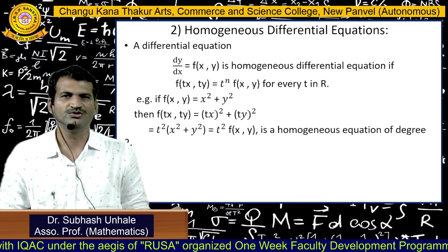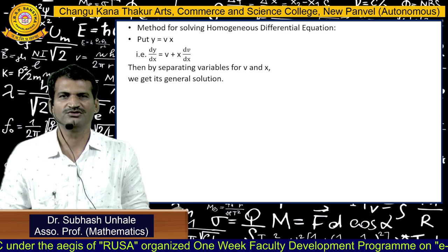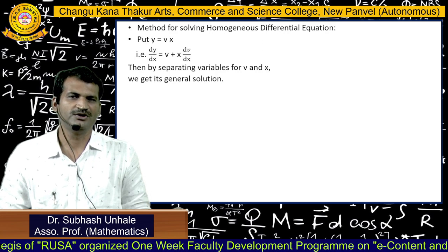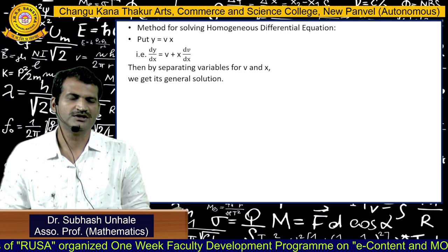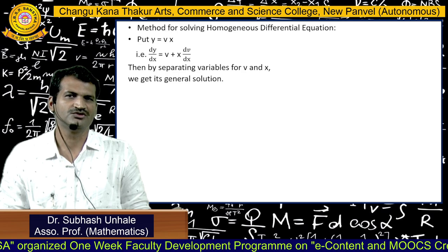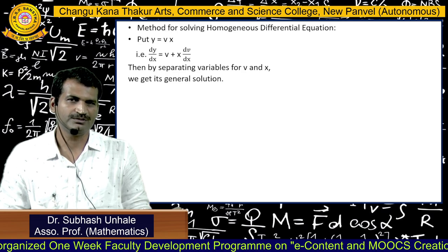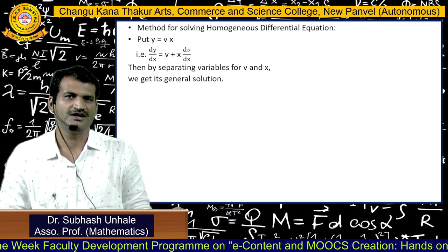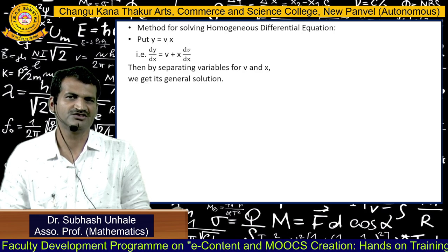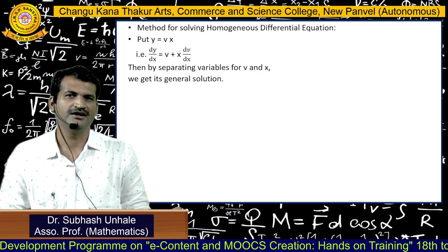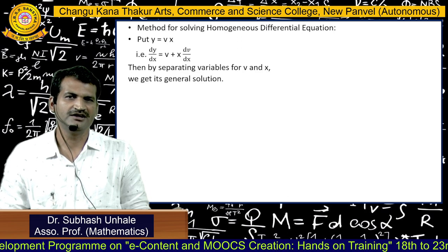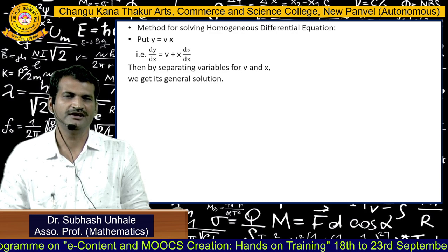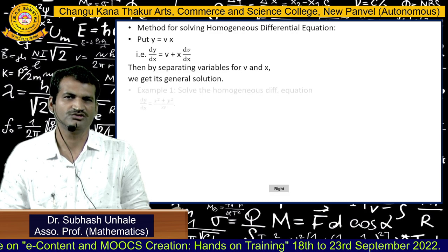To solve a homogeneous differential equation, we convert it into variable separable form by substituting y = vx, so dy/dx = v + x·(dv/dx). We then separate the variables for v and x and integrate to get the general solution.